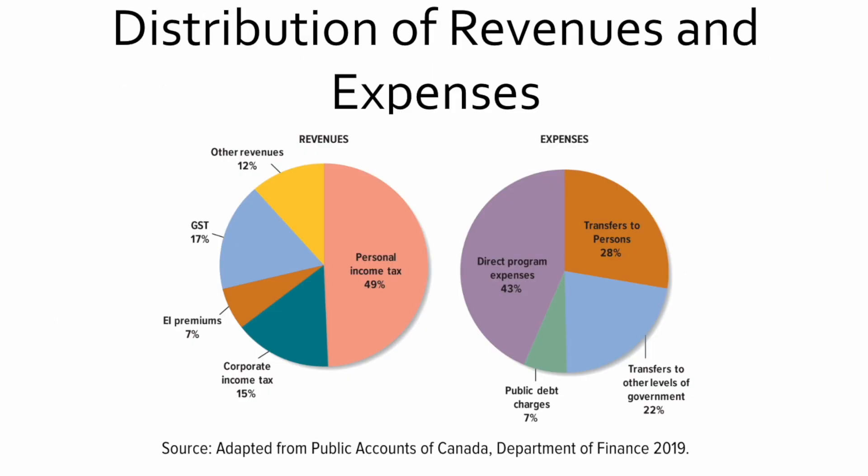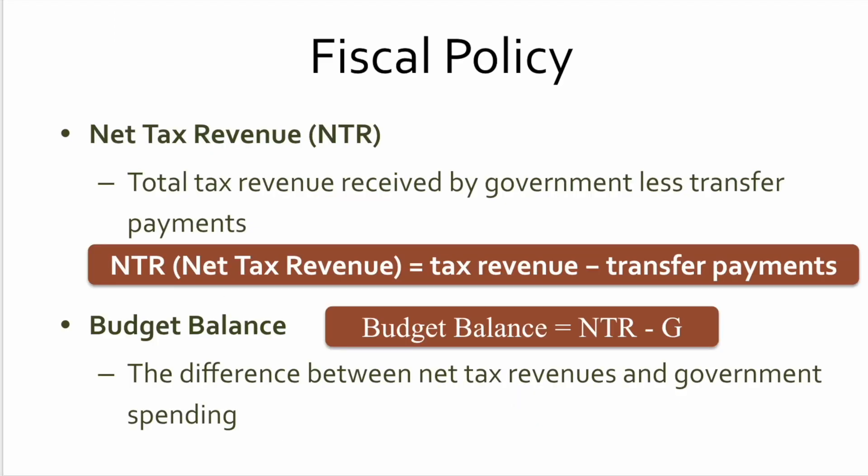You can see the distribution of revenues and expenses broken down in these pie charts. A good chunk of revenues comes from people — personal income tax represents about half of all revenues that come in. In terms of expenditures, direct program expenditures account for about 43%, and transfers to persons are about another 30%.